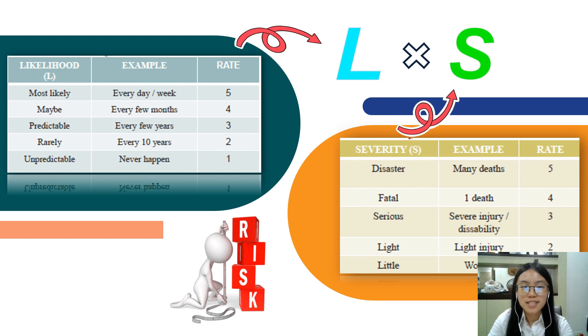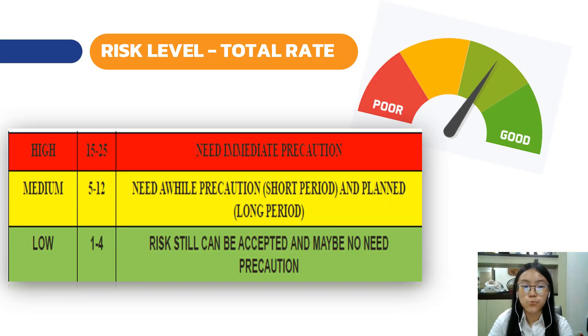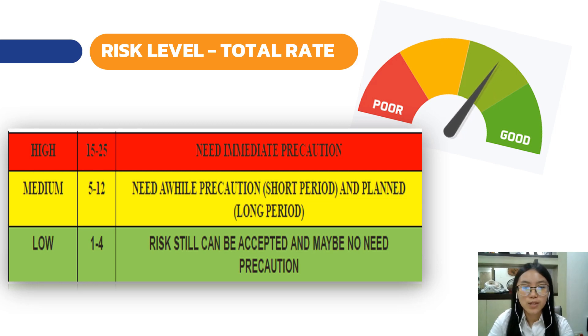If you get the result 1 to 4, it indicates low risk. 5 to 12 means medium risk and 15 to 25 is high risk. Immediate precaution is required.